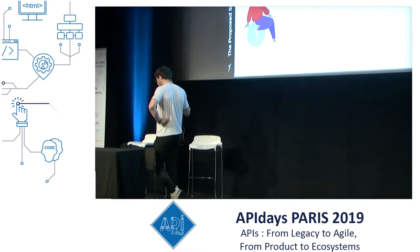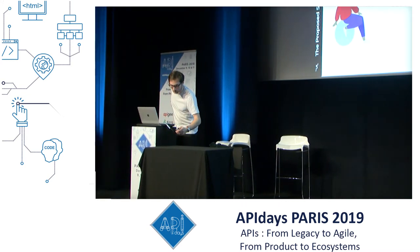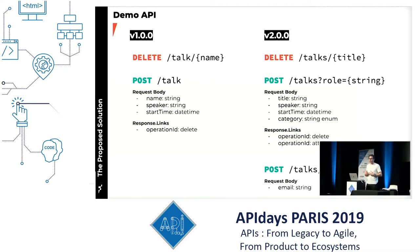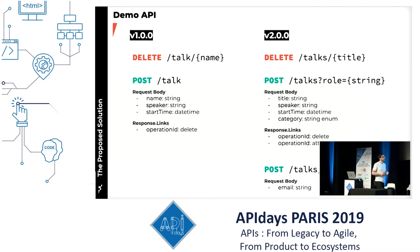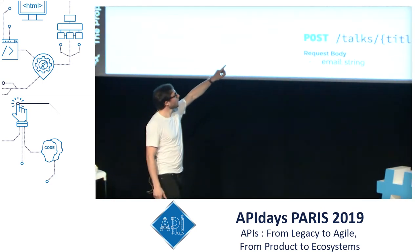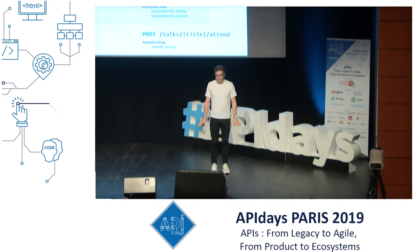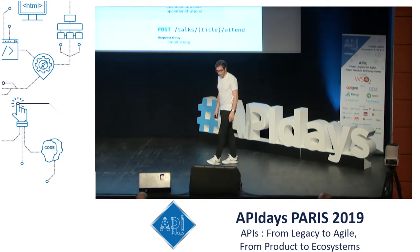Let me show you the demo. The first version has just two operations on the API: I can delete a talk and I can create one. To create one, I send the name, the speaker, and the start time, and I get a hypermedia link to delete the operation. On the second version, I'll change the URL by adding an 'S' — it's now 'talks' not 'talk'. I'll implement access control with a role, change 'name' to 'title', and add an operation to attend a talk.